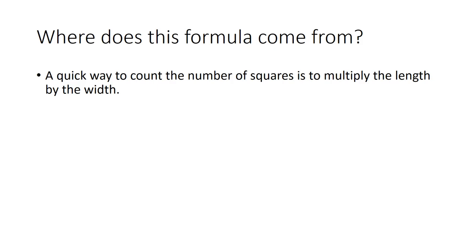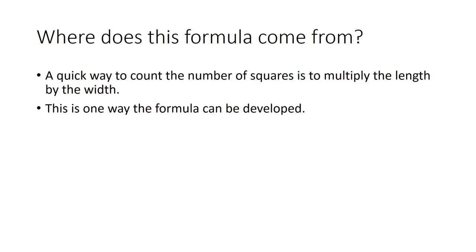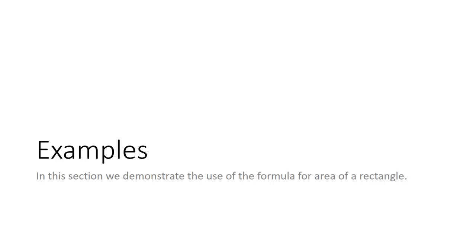A quick way to count the number of squares is to multiply the length by the width. The formula simply eliminates the need to count — multiply the length and the width. That is one way the formula can be developed.